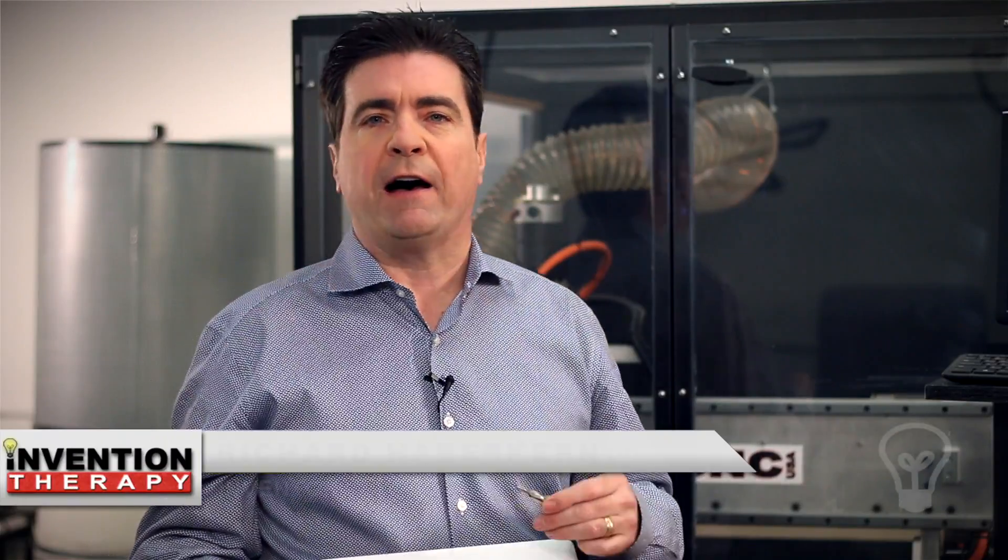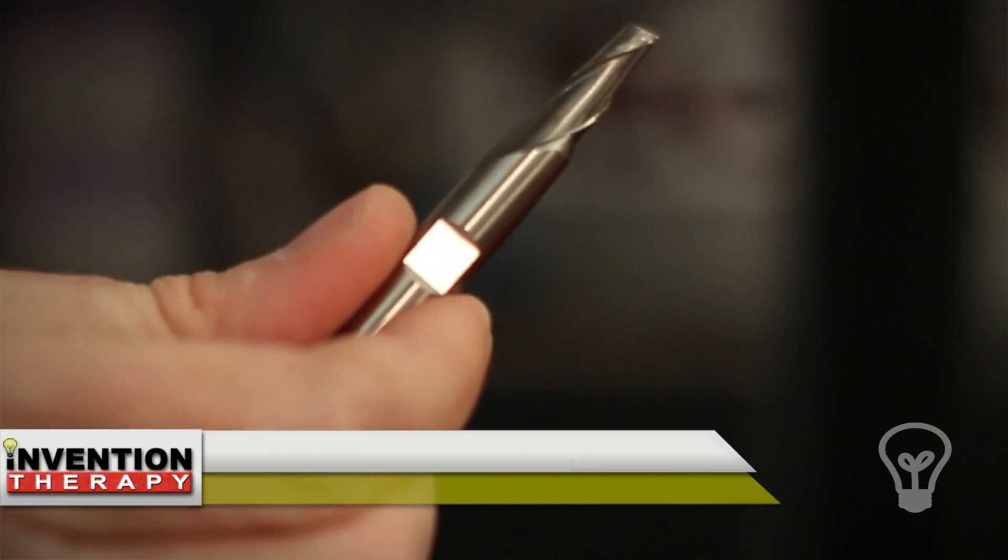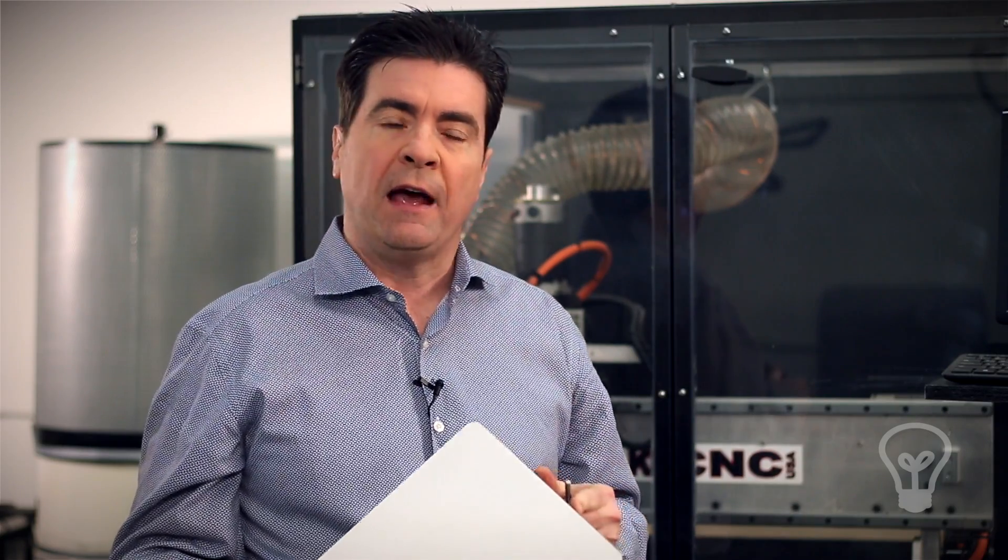A CNC router uses cutting tools like this, this is called an end mill. It can also use router bits, which you might be familiar with from woodworking. Either one will cut through this MDF or other pieces of wood. And we're going to show you how we set it up on this machine.